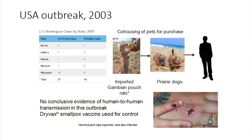There was also a USA outbreak that was zoonotic in 2003. Thankfully nobody died — all cases were relatively mild — but it resulted from the importation of Gambian pouched rats, which were then co-housed in the same facility with prairie dogs, another type of rodent. The prairie dogs were being bred to be kept as pets; transmission went from the pouched rats to the prairie dogs, and then into the people who handled those prairie dogs. We saw more severe lesions — a greater number at the site of inoculation where people were bitten or scratched.